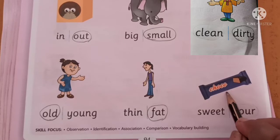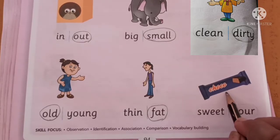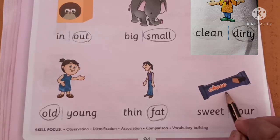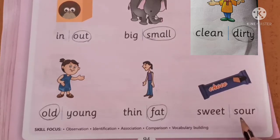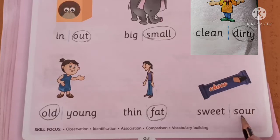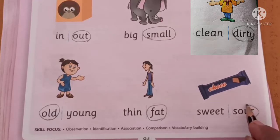Now this is chocolate. Chocolate आप खाते हैं न? आपको कैसे लगता है? उसका taste कैसे होता है? Sweet. मीठा लगता है आपको? तो उसे sweet कहते हैं. Sweet का opposite क्या आता है? Sour. So we will circle on sour. S, O, U, R — sour.